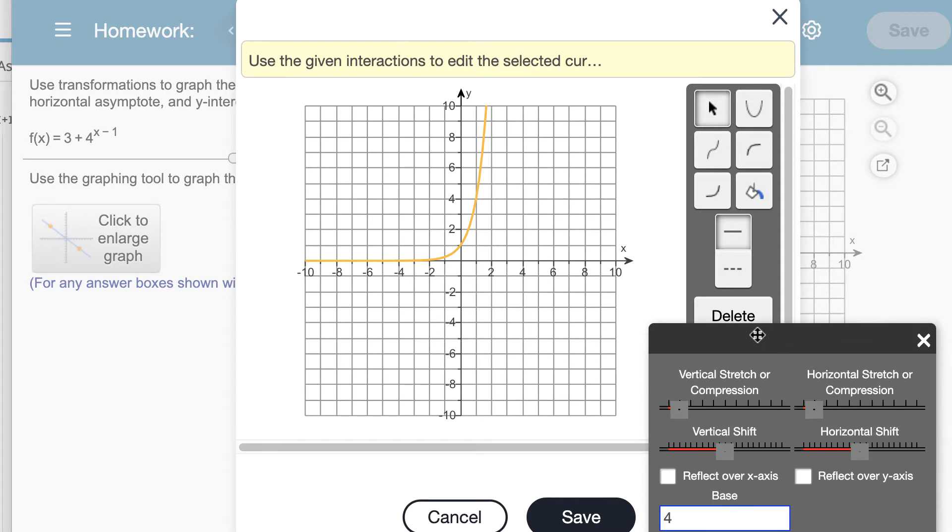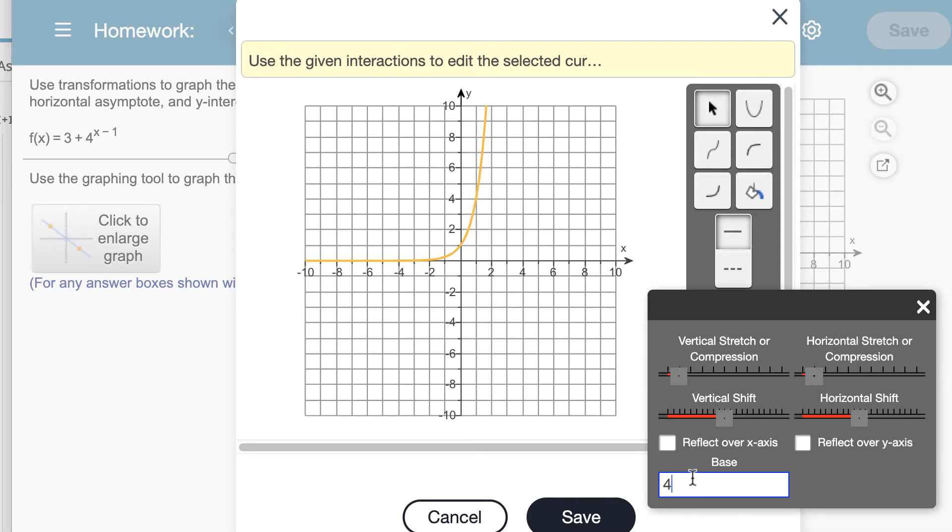I'm going to drag this dialog box up. The first thing I like to do is make sure the base is set appropriately. In this case, I have a base 4 exponential, and that's what the base is. I would change that if I need to.